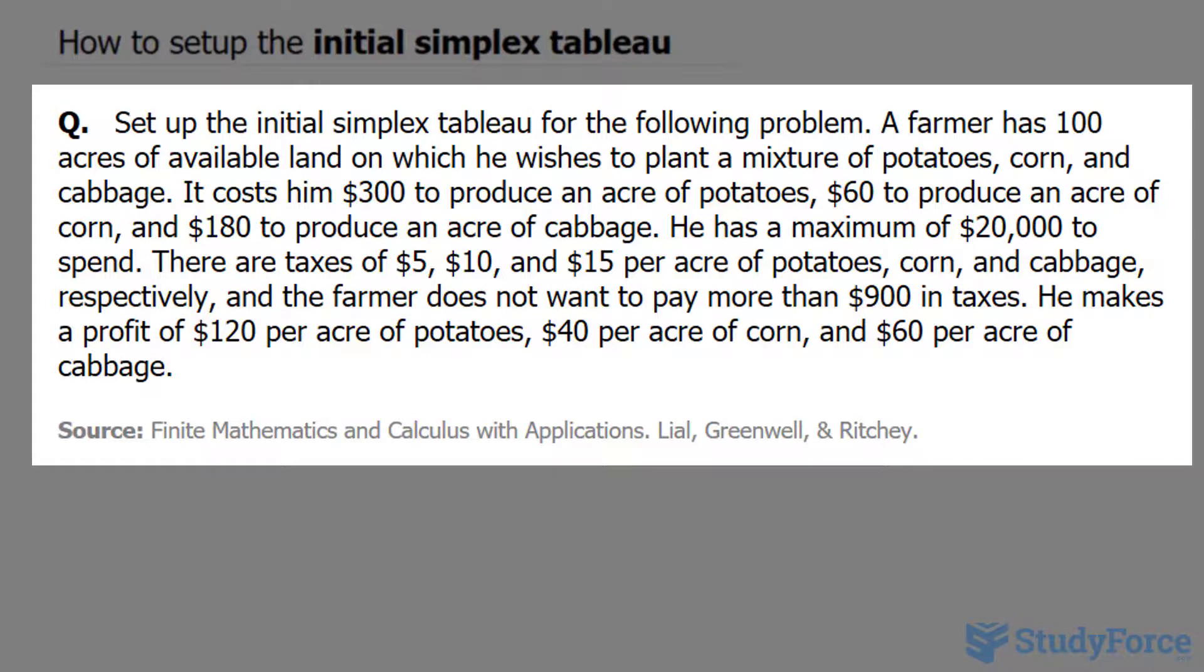A farmer has 100 acres of available land on which he wishes to plant a mixture of potatoes, corn, and cabbage. It costs him $300 to produce an acre of potatoes, $60 to produce an acre of corn, and $180 to produce an acre of cabbage.